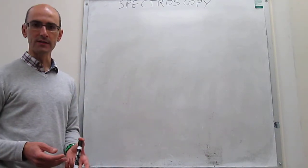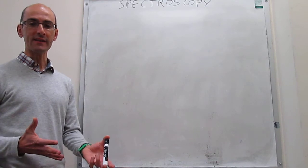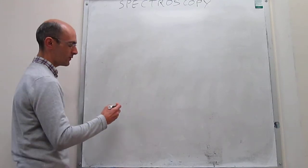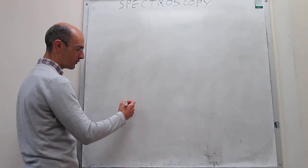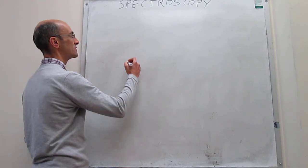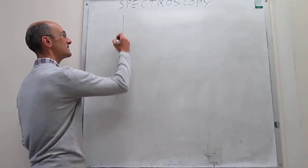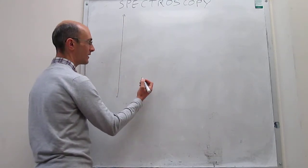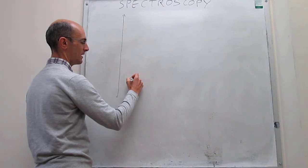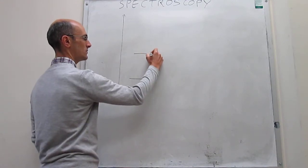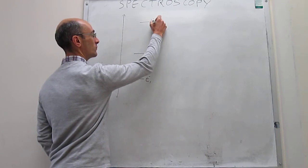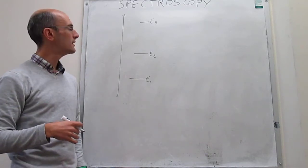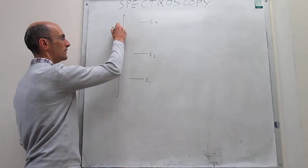Let's summarize the two main types of spectroscopic experiments that you can run. Suppose we have a molecule and we analyze how its energy states are arranged. This could be any type of energy states in that molecule. Suppose you have three energy states: E1, E2, and E3. There could be many more, but this is a placeholder for any type of energy states that a molecule or an atom can have.